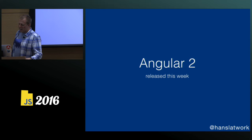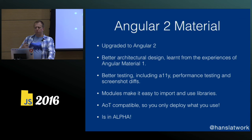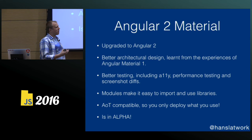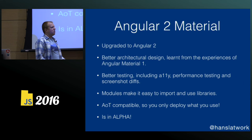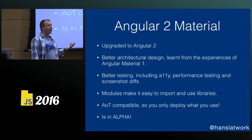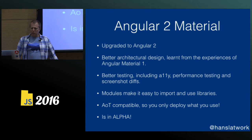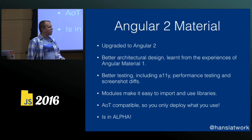For Angular 2, what we did is basically start from scratch the Angular Material project. We started building Angular 2 Material, which is a full rethinking and full redesign of the Material components with everything we learned — better architectural design, and learning from the mistakes of Angular 1. CSS is hard. Making sure there are no breaking changes is hard. We wanted to start from the ground up thinking about that in advance. There's better testing — accessibility testing, performance testing, and screenshot diffs to ensure that when we change something, it's deliberate.